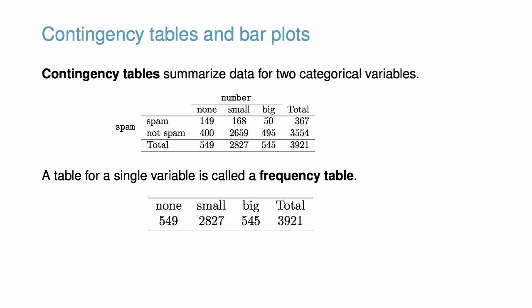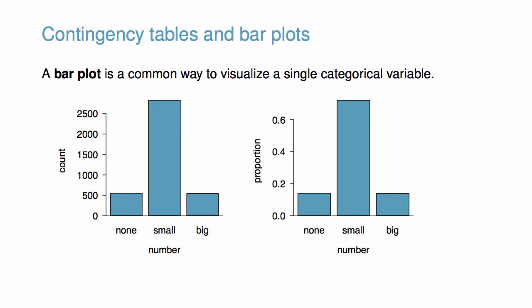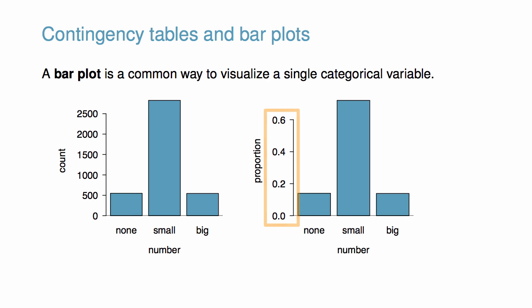In contrast to contingency tables, which compare two categorical variables, a table for a single variable is called a frequency table. The frequency table shown here provides the counts for all three levels of the number variable. This information is identical to the bottom margin of the contingency table we just saw. A bar plot is a common way to visualize a single categorical variable. The bar plot on the left uses count for the vertical axis, while the bar plot on the right displays this information as a proportion of the total number of emails.